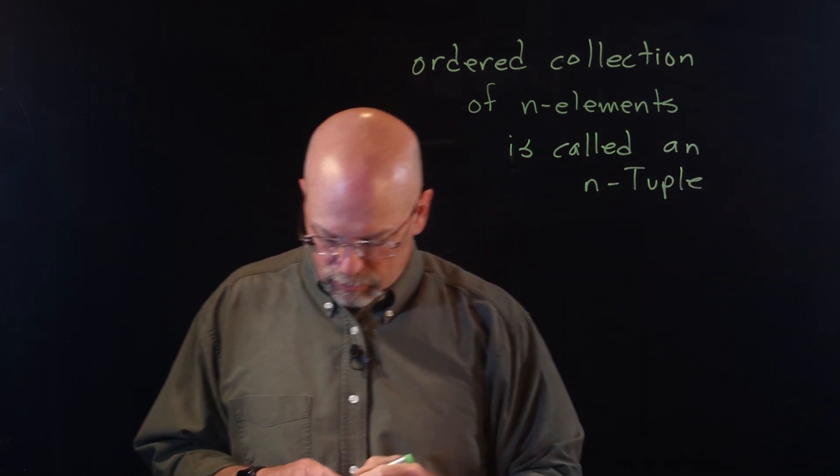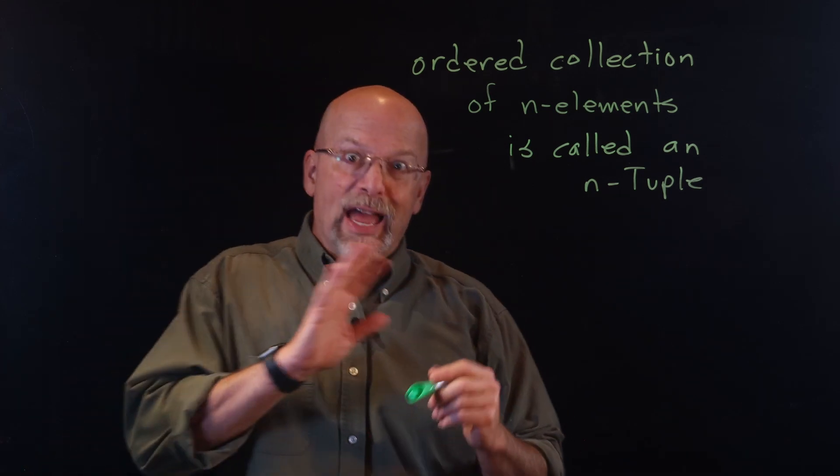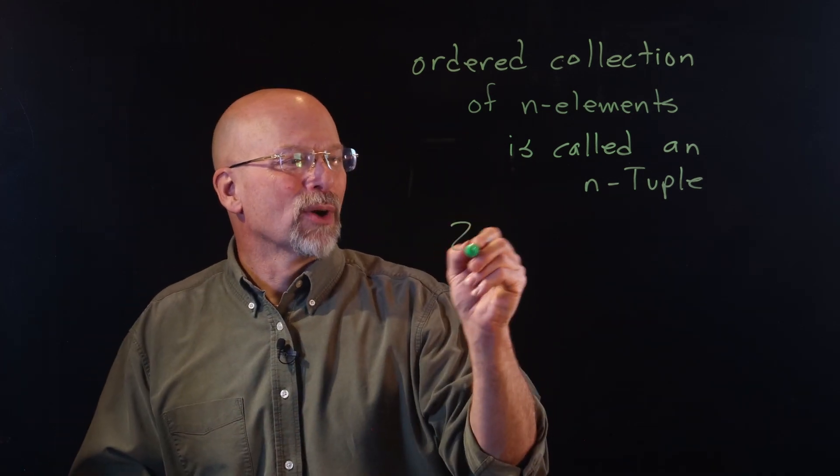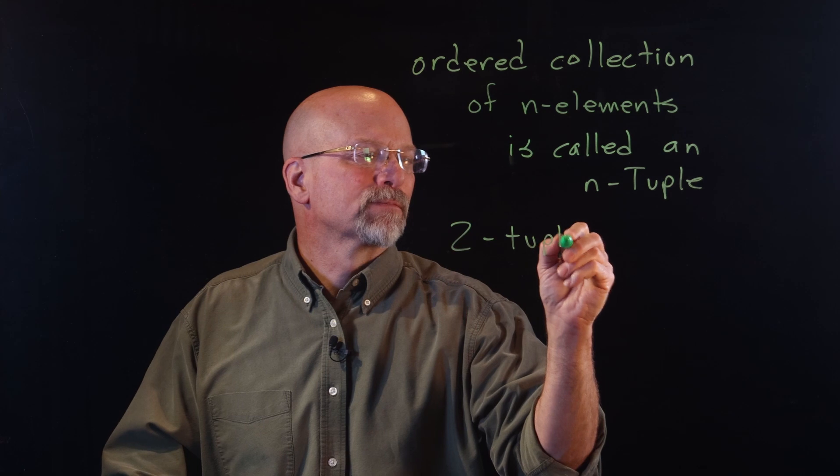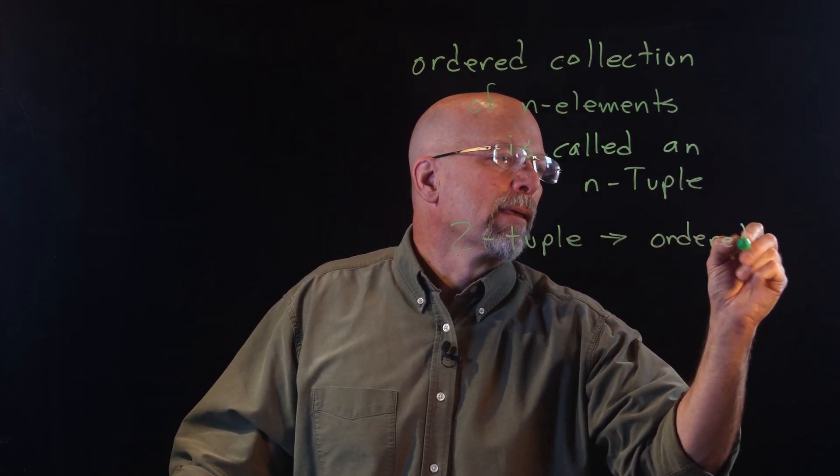So this ordered collection of n elements, we are going to call an n-tuple. Now, you're already familiar with a two-tuple. Another word for this is called an ordered pair.